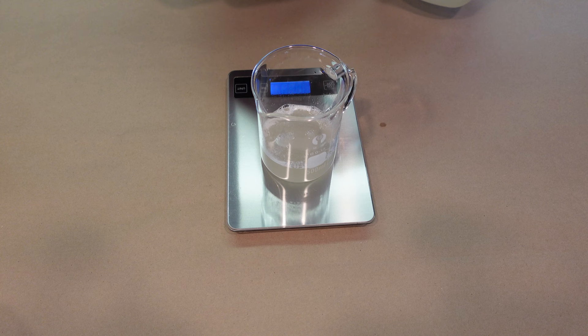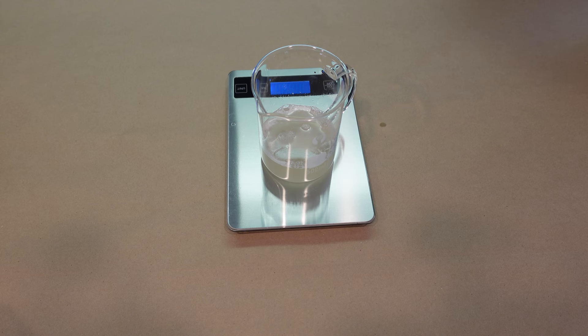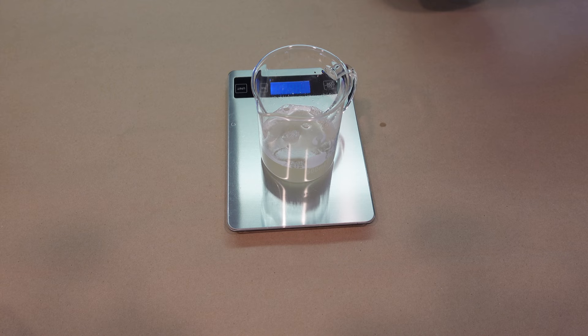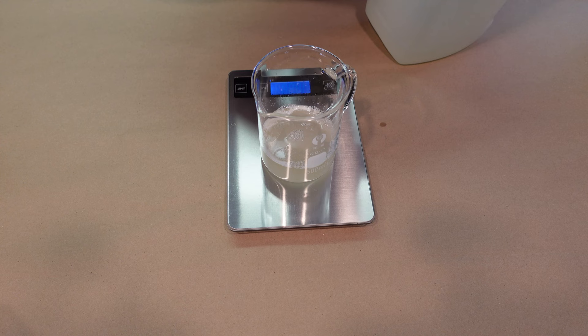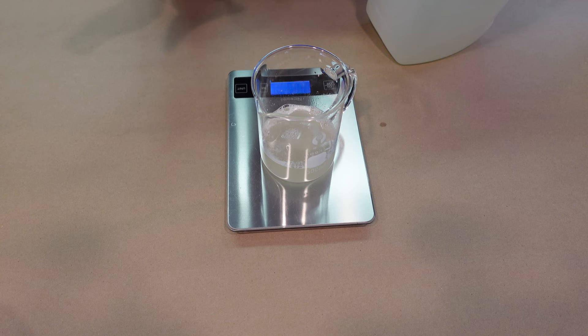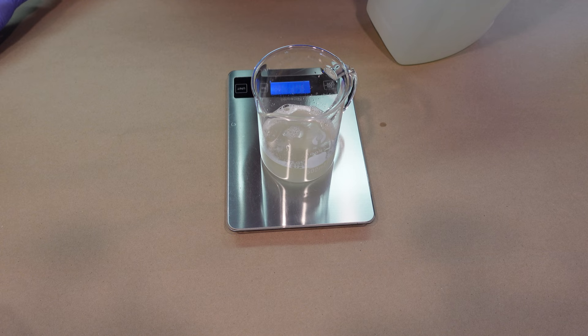Next up we're going to be adding in some Capril Glucoside. This is also a natural surfactant. It's mild. It has great solubilizing properties, which means once this goes in there, it's going to combine with the small amount of tea tree oil that we have in there and you won't have any of that separation of the tea tree oil from the formula anymore.